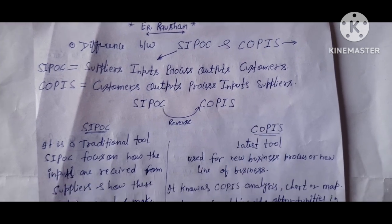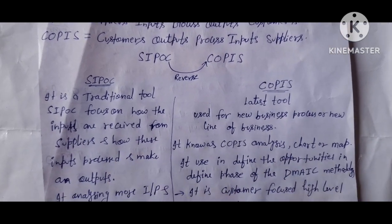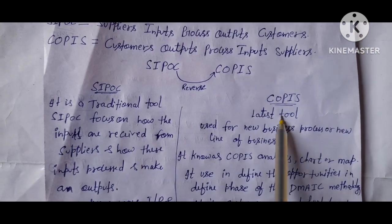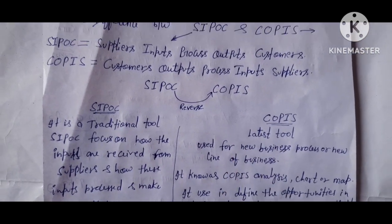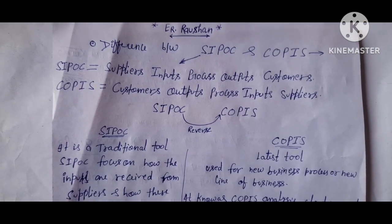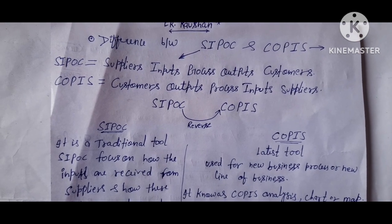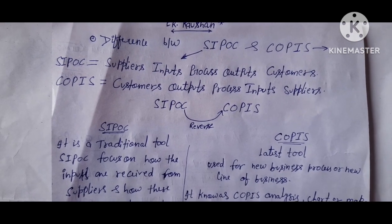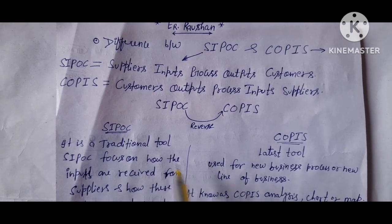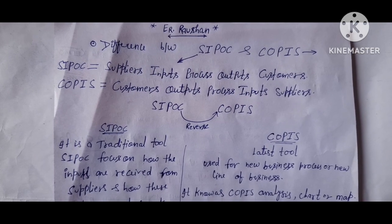COPIS is a reverse of SIPOC — if you reverse SIPOC, it becomes COPIS. Before discussing the difference between them, you should know where SIPOC and COPIS are used. If you start a new business process, whether manufacturing or services, you use them to define your stepwise process from start to end.